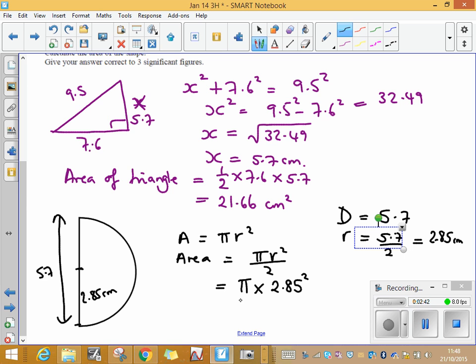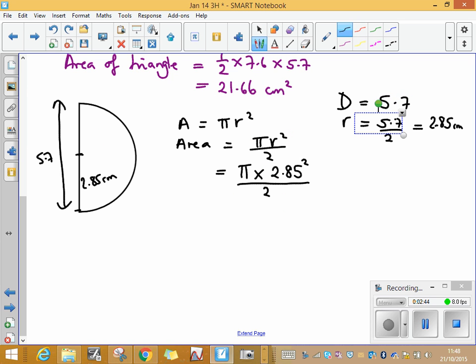If I work that out on my calculator it comes out as 12.758. Don't round at this stage, you need to keep that accurate. You can put it in your memory of your calculator by pressing shift and then store which is the recall button. If you press A it'll keep it in your memory as A.